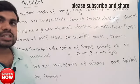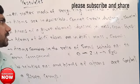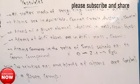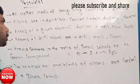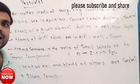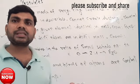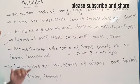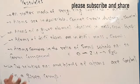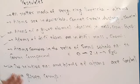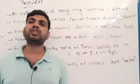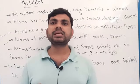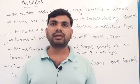To summarize the postulates of Dalton's atomic theory: all matter is made up of tiny particles called atoms; atoms are indivisible and cannot be created or destroyed during a chemical reaction; atoms of a given element are identical in mass and chemical property; atoms of different elements differ in mass and chemical property; atoms combine in small whole number ratios to form compounds; and the relative number and kinds of atoms in a compound are always constant. You can review the video again and watch the next video for further information.